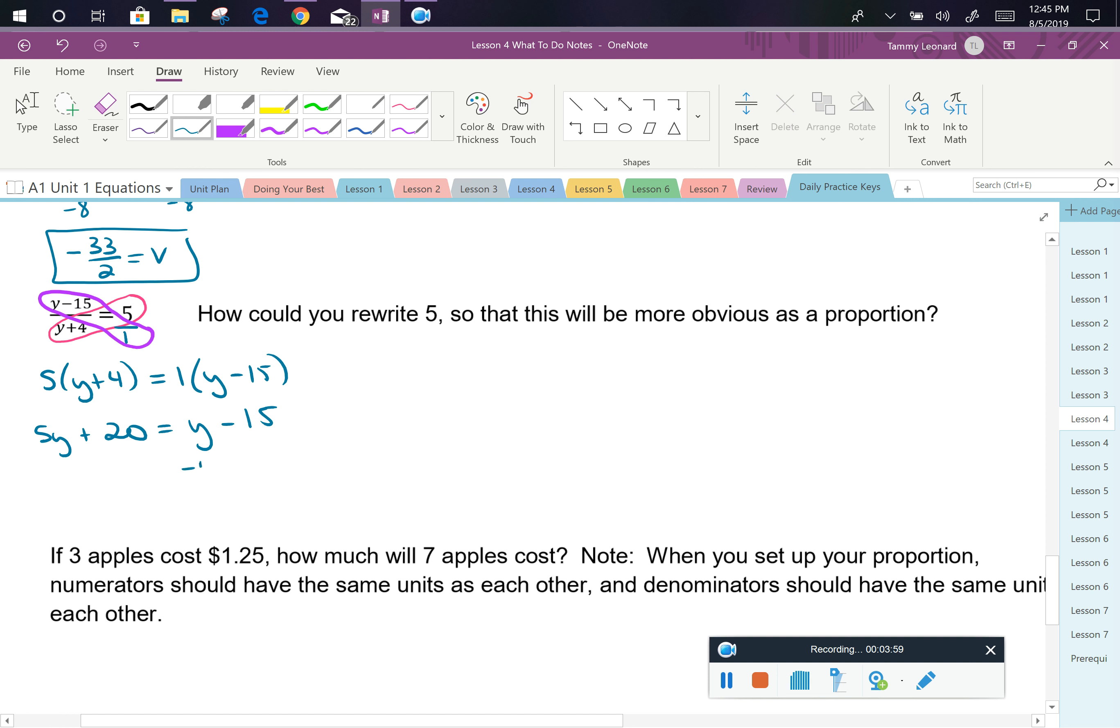If we subtract y from each side, at the same time we could also subtract 20 from each side. So we have 4y is equal to negative 35. And again, we see we have a fraction that's probably not going to divide evenly. If I have 4y equals negative 35, and I divide both sides by 4, I can see that's not a fraction that can be reduced. So I'm going to leave it alone at y equals negative 35 fourths.